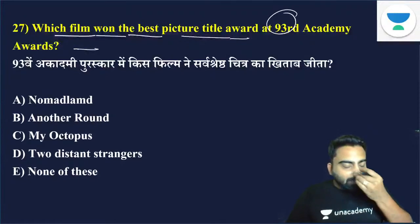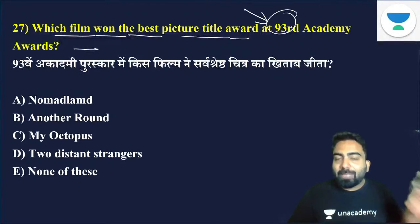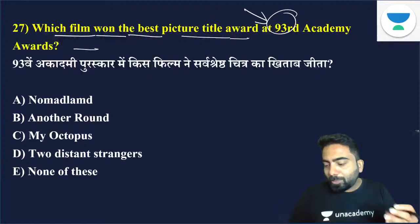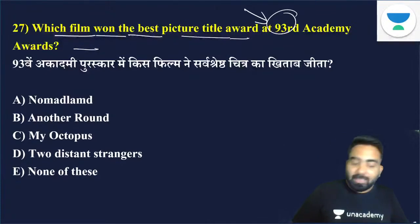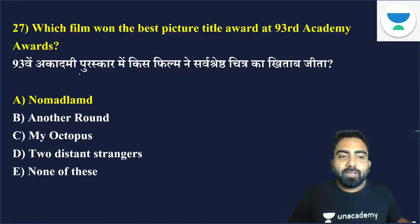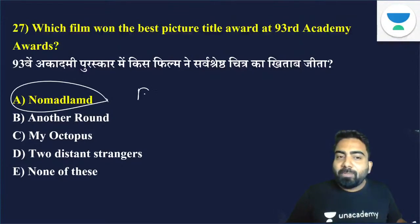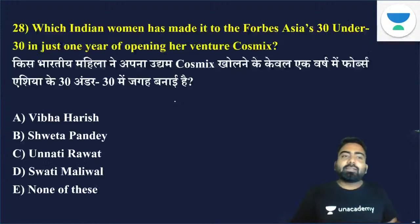Remember this is the 93rd edition of the Oscars. Which film won the Best Picture award? The answer is Nomadland — option A is the right answer. Nomadland won both the BAFTA and the Academy Award for Best Picture.